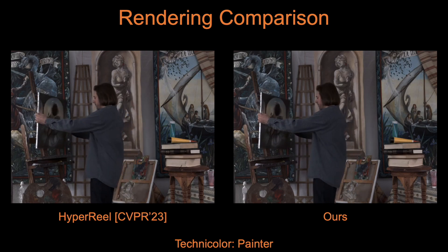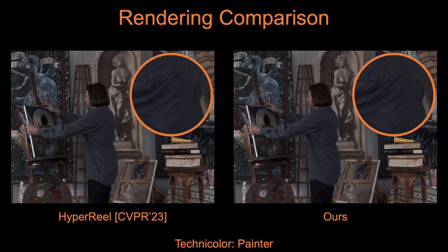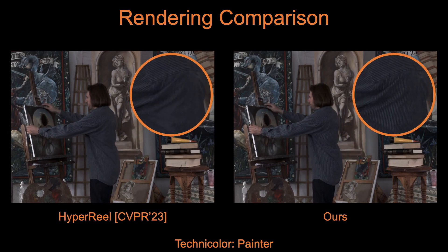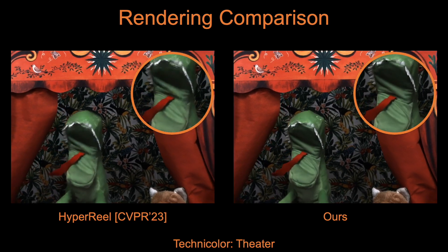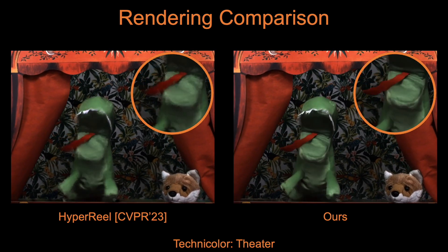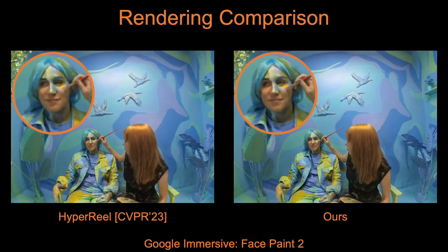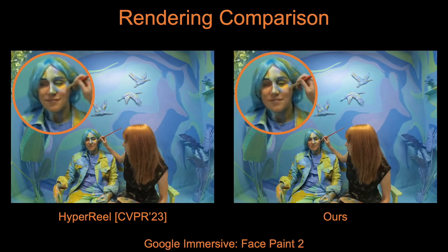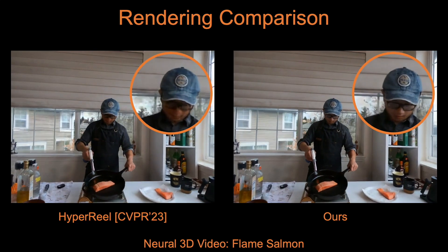Based on our 4D semantic embedding, we introduce the concept of gears for stratified modeling of dynamic regions based on the extent of their motion. We adjust the spatial-temporal sampling resolution for each region in proportion to its motion scale, achieving more photo-realistic dynamic novel view synthesis.